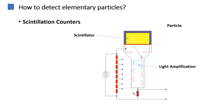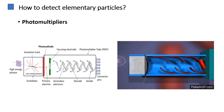Scintillators are materials that emit light when charged particles pass through them. They are used to detect and measure particle interactions by sensing this emitted light. Photomultipliers are detectors used to amplify the signal of light emitted by scintillators or Cherenkov counters. They convert the light signals into electrical pulses for analysis. Each of these detection methods has its advantages and limitations, and the choice of detector depends on the specific requirements of the experiment and the particles being studied.